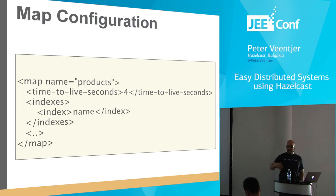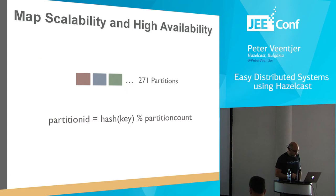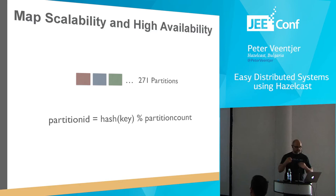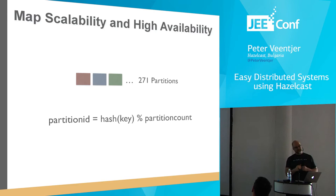Let me give you some background on how we make the system scalable and highly available. By default, we chop everything up into 271 partitions — it's a configurable number. We take the key, calculate a hash for it, do a modulo of the partition count, and based on that find the partition ID. Every member in the cluster has a partition table that states which partition lives on which member. So every member in the cluster knows exactly where all data in the cluster is.